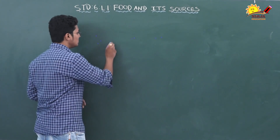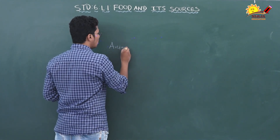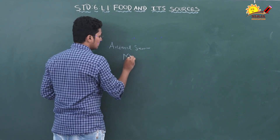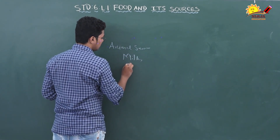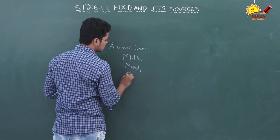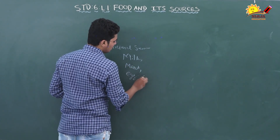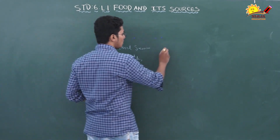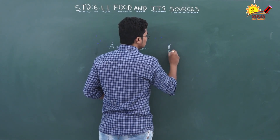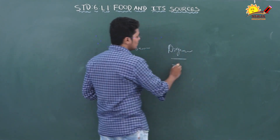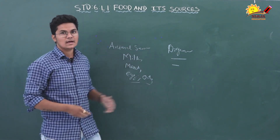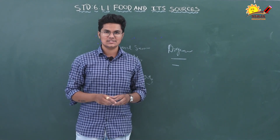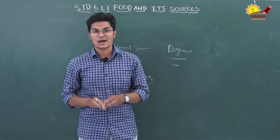In this video we are going to learn about animal sources — what animals give us to eat. Animals give us milk, meat, eggs, oil, and many other things. We are also going to talk about organisms' feeding habits, different kinds of organisms, how they are classified, and the last thing we will learn about is food chain. Please don't forget to like, share, subscribe, and press the bell icon.